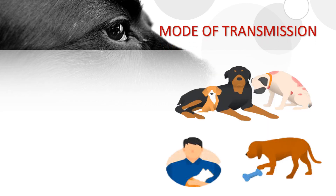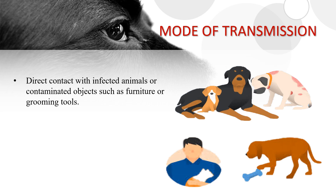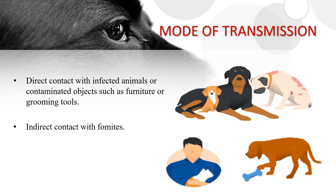Mode of transmission: The disease is more common in young or physiologically or psychologically stressed dogs, such as those in extremely crowded environments. Transmission is by direct contact with an infected animal or contaminated objects such as furniture or grooming tools, but mere exposure does not always result in disease. Indirect contact with fomites may also be the mode of transmission, and mechanical transmission through owners and handlers may also occur.